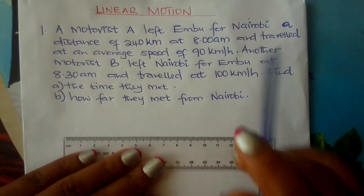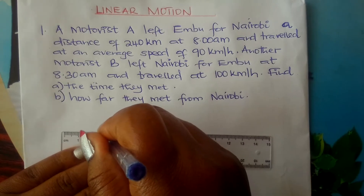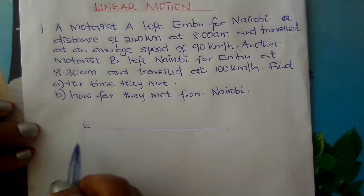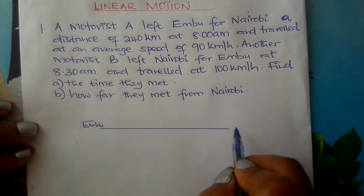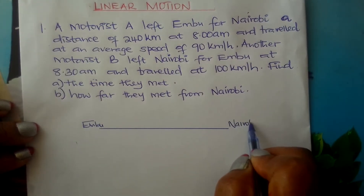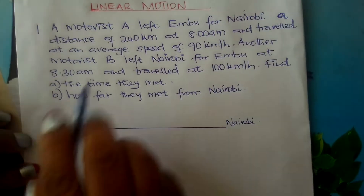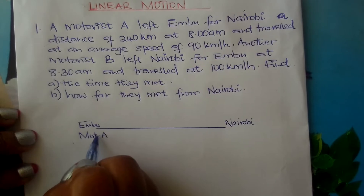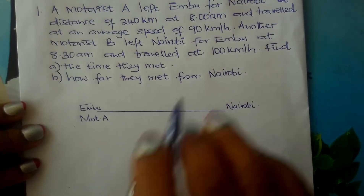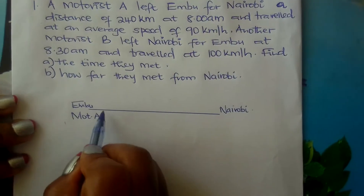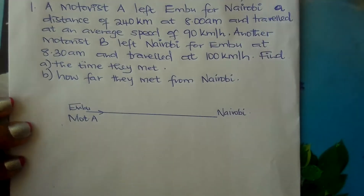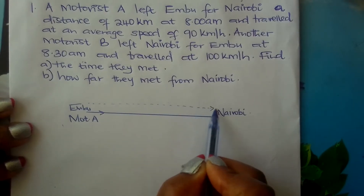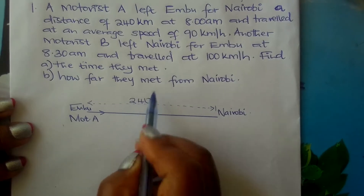The first thing you do is draw a line to represent the route from Embu to Nairobi. On one end write Embu, and on the other end write Nairobi. Motorist A left Embu for Nairobi, so he is moving this way. The distance between Embu and Nairobi is 240 km.